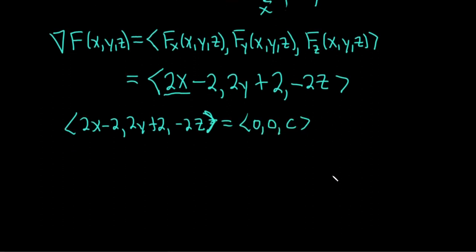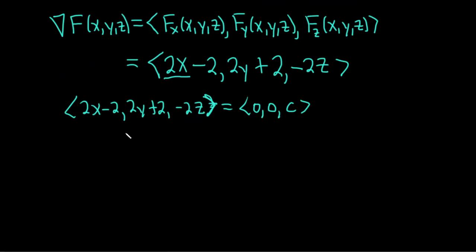In particular, what matters here is not the z, because we don't know what c is, but 2x minus 2 is equal to 0. That's very helpful. And 2y plus 2 is equal to 0. That's also helpful.